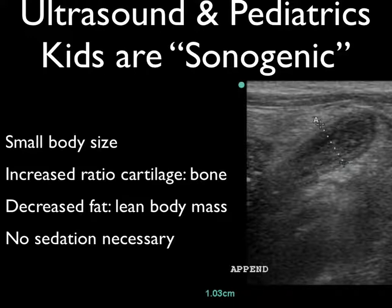Ultrasound in kids are good matches for one another. Kids are very sonogenic because they don't have a lot of fat, they're small so we can use higher-frequency transducers, and they have a lot of cartilage compared to ossified bone — ultrasound goes right through cartilage very easily. You can have mom sit down with the child in her lap and scan the child without any sedation at all. You don't need to sedate them, which avoids the need to control their airway and the risk of complications.